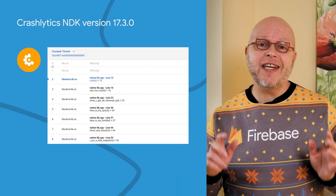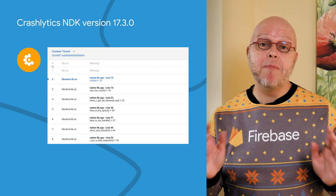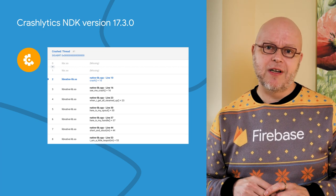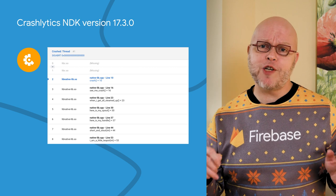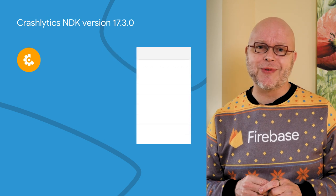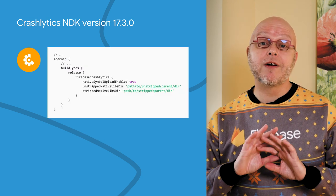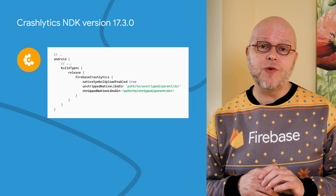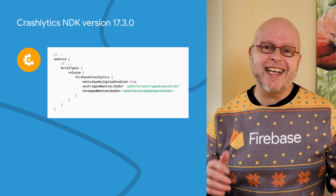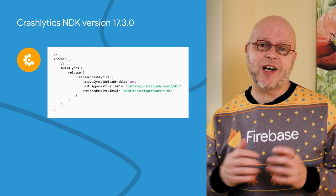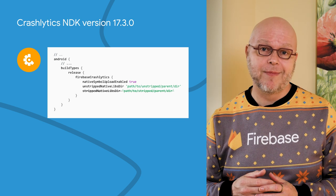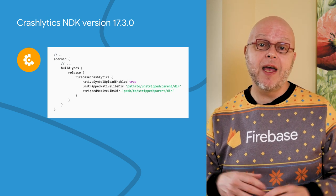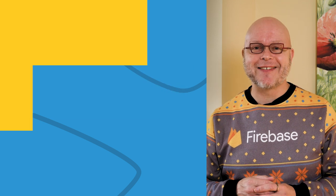Crashlytics NDK version 17.3 has a major upgrade in our native crash reporting internals. Specifically, we're now using Crashpad for reporting issues. This update should require no work on your part, but it addresses emerging issues with capturing certain types of native SIG abort crashes on Android versions 10 and later. Thanks to all developers reporting the issue on GitHub, and who now have given us feedback on the fix.